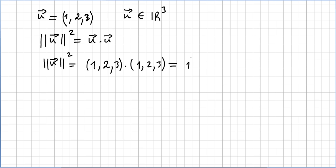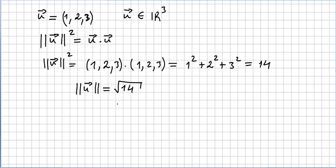And that's nothing but 1 squared plus 2 squared plus 3 squared, which gives us 1 plus 4 plus 9 equals 14. So the norm of vector u — this time I'm going to put the square root in on purpose — is the square root of 14.